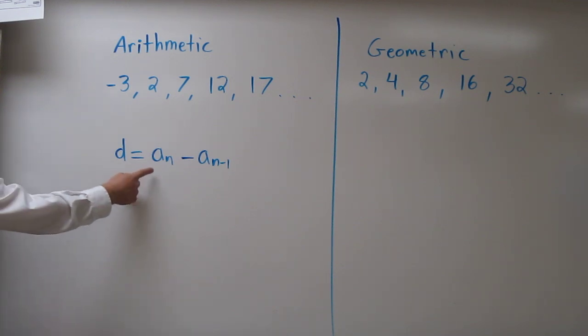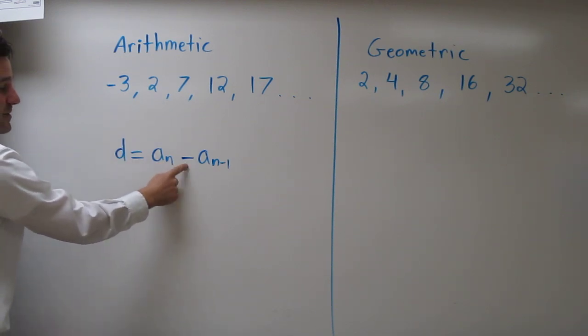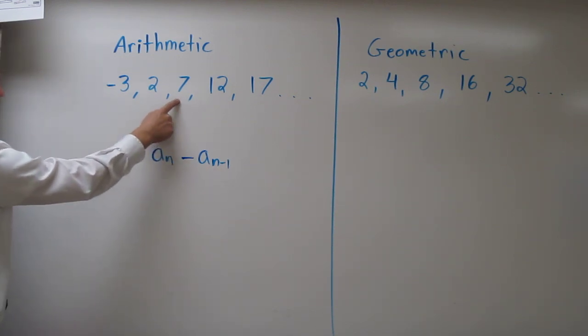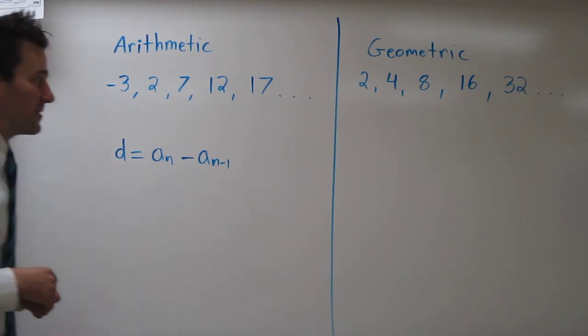So what this means is if you took the third term, the 7, take the third term and subtract the second term. So third term minus the second term, that will give us d, the common difference.